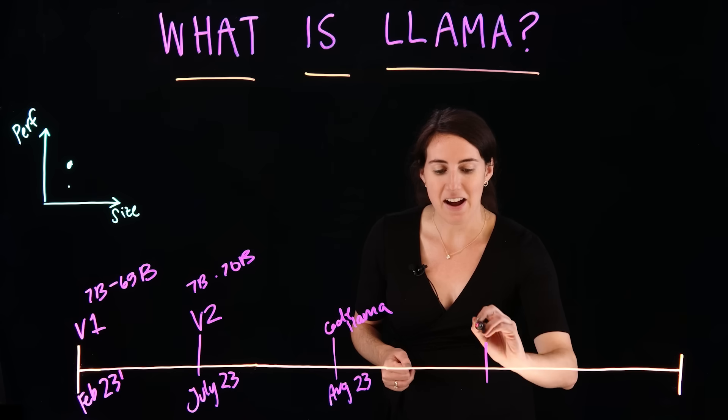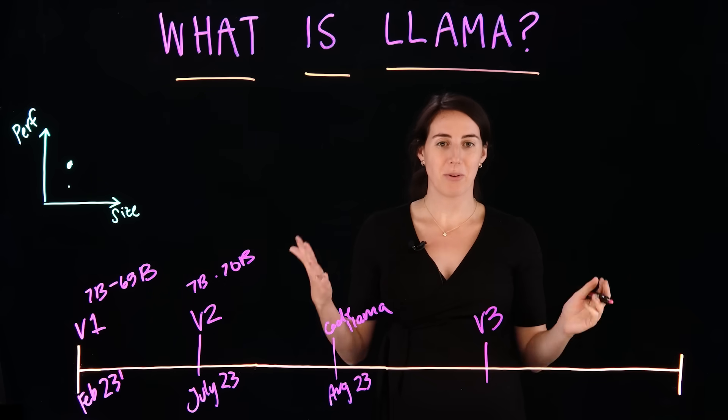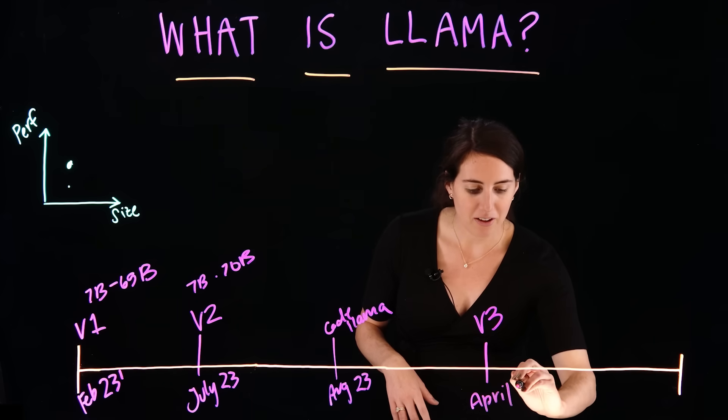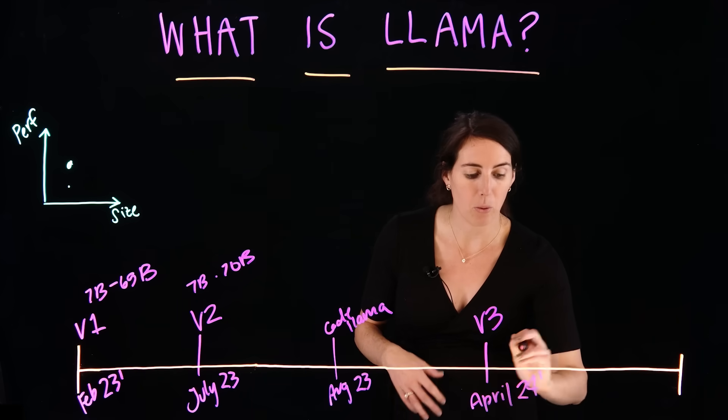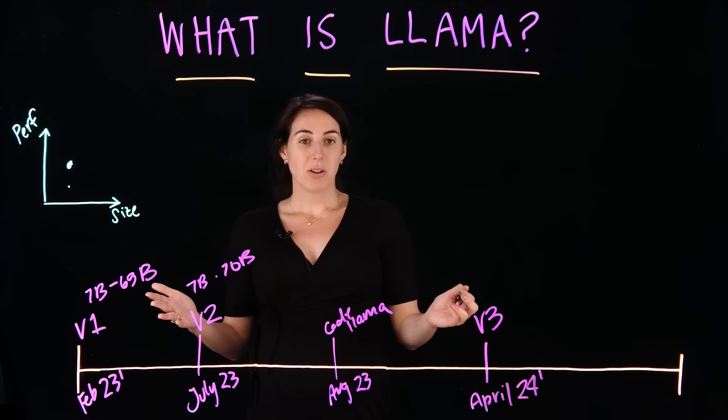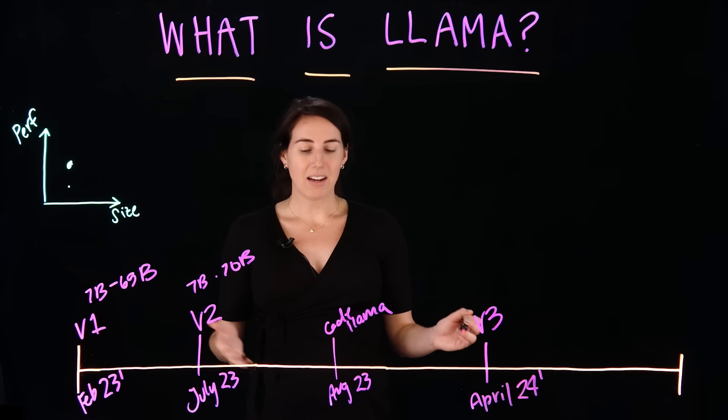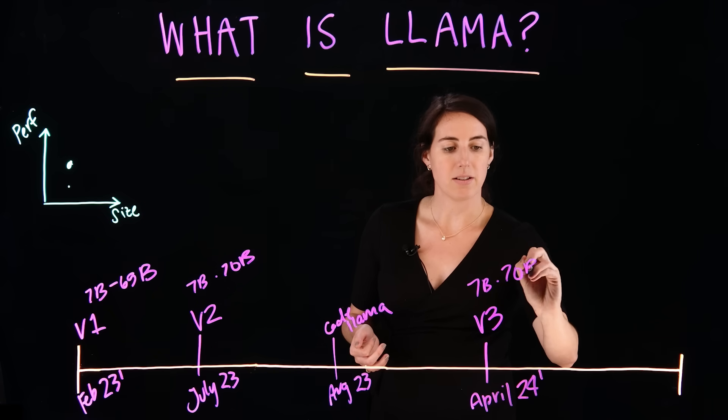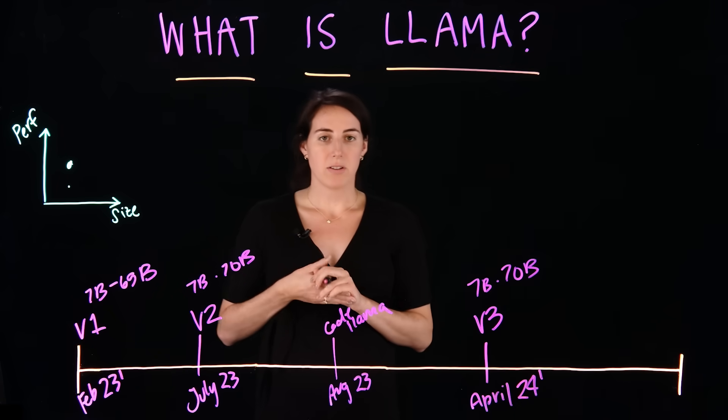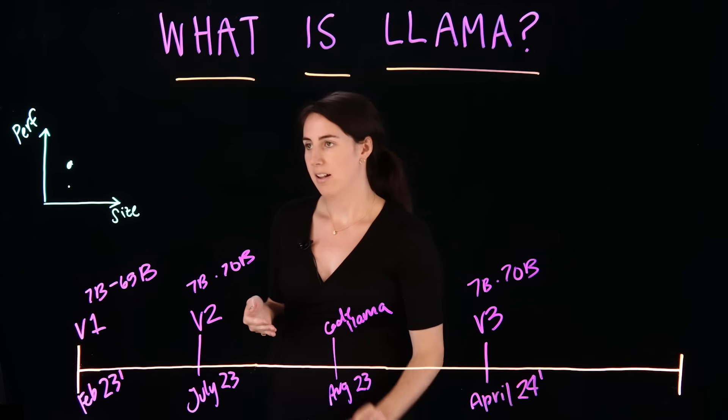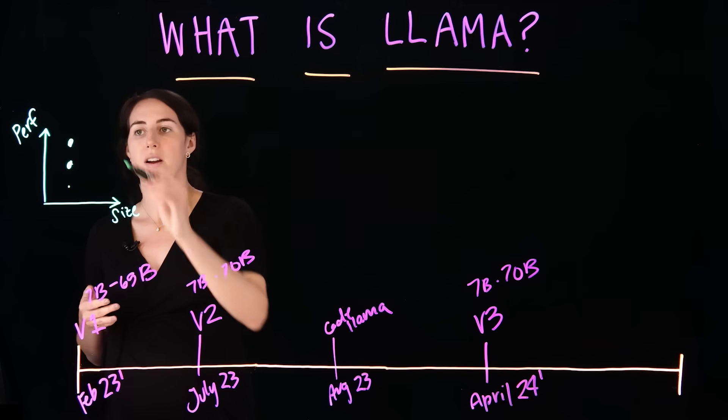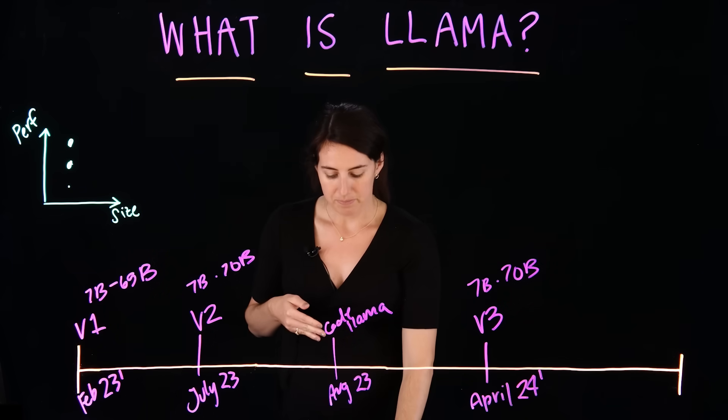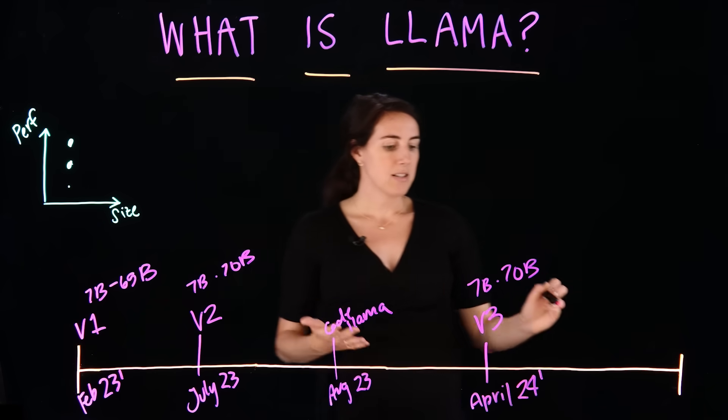Next, we had Llama 3. Llama 3 was long-awaited and came about in April of 2024, earlier this year. And with the Llama 3 model, very exciting. Again, focused on the same range of models from 7 billion to 70 billion and a few other sizes in between. But again, Llama was focused on increasing that performance relative to the same size.